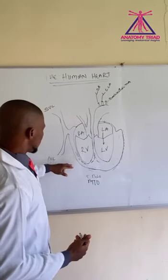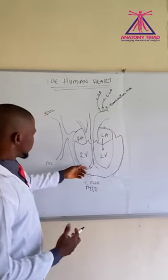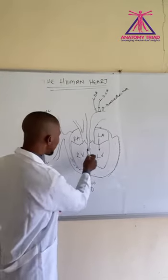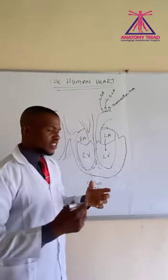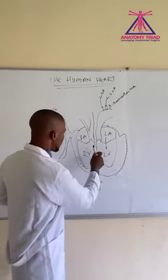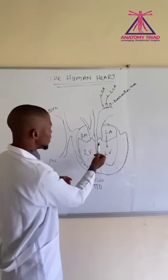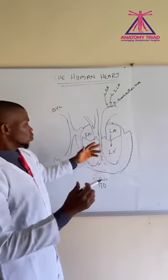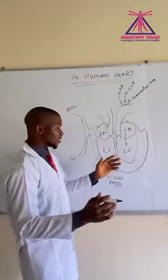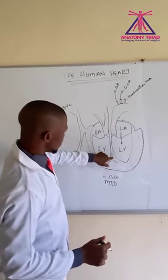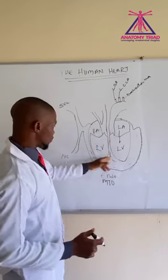Having known that, we are going to check why the blood is not mixed in the heart. It is because there is a separation between the two chambers of the heart, and this separation is known as the cardiac septum.